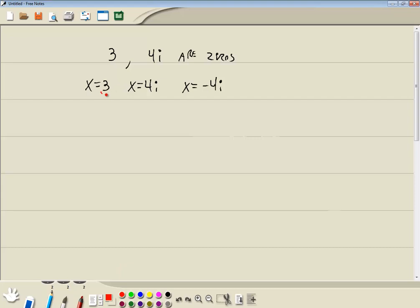The first thing I'm going to do is move these to the same side as X. I'll take 3 over, take 4i over, and take negative 4i over. So we have X minus 3 equals 0, X minus 4i equals 0, and X plus 4i equals 0.